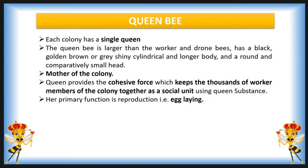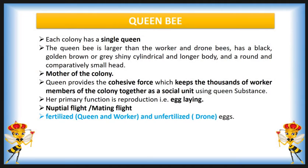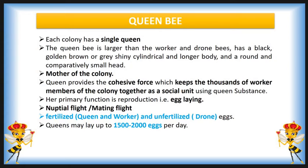Her primary function is to reproduce, that is egg-laying. The virgin queen mates with many drones in what is known as the nuptial flight or marriage flight. She produces both fertilized and unfertilized eggs — from fertilized eggs, queens and workers are produced; from unfertilized eggs, only drones will be produced. During the peak of production, a queen may lay up to 1,500 to 2,000 eggs per day, and one queen may produce up to 2,500 eggs per year and possibly more than 10 lakh in her lifetime.